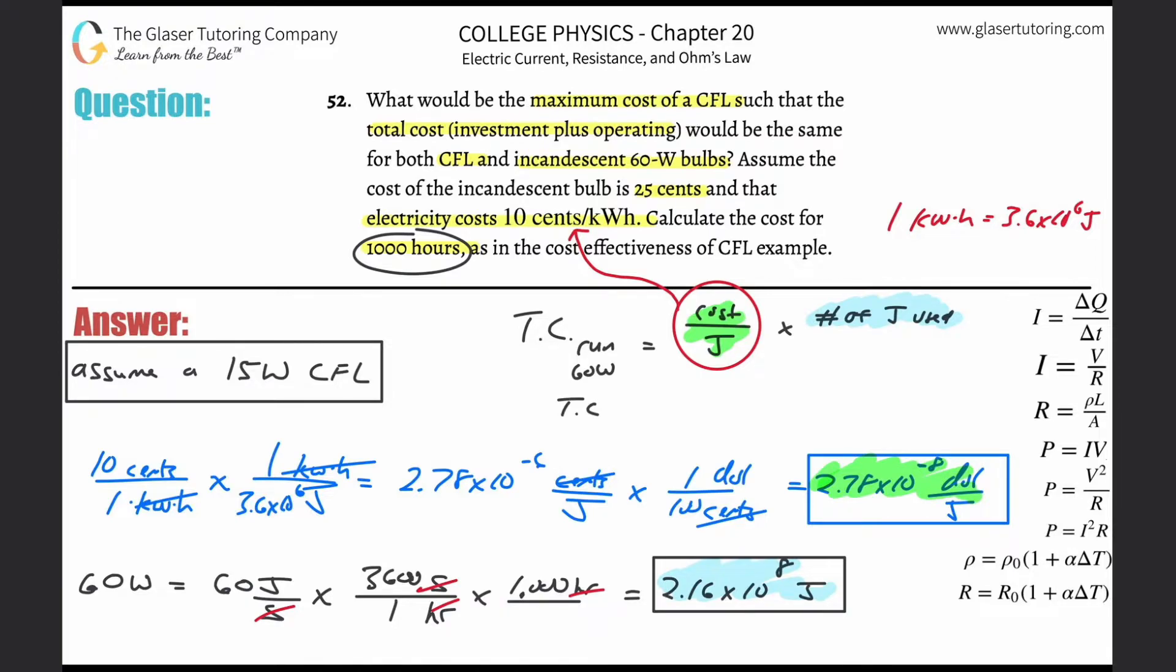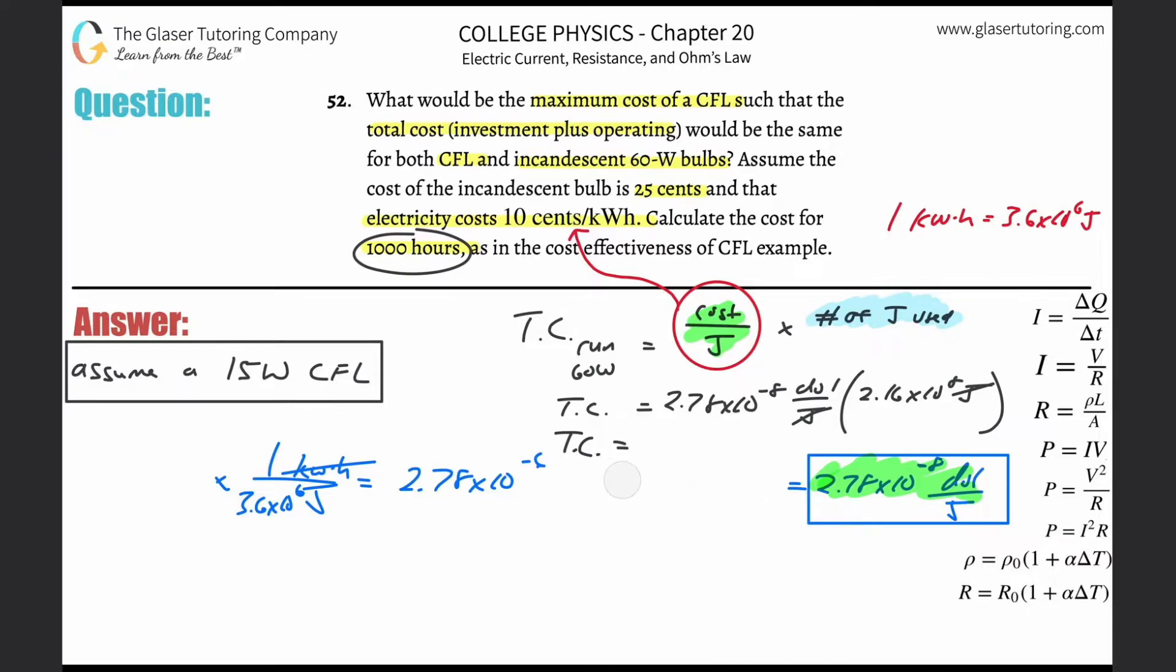So what I can now do is I can finally find the total cost of running the 60 watt bulb. I'm going to take the 2.78 times 10 to the negative eight dollars per joule, multiply that by 2.16 times 10 to the eight joules. And if we notice that'll tell us the dollars. So the total cost here is going to be equal to, let's plug it in. We got 2.16 times 10 to the eight multiplied by 2.78 times 10 to the negative eight. And this works out to be basically $6. So the total cost of running this thing is going to be six bucks.